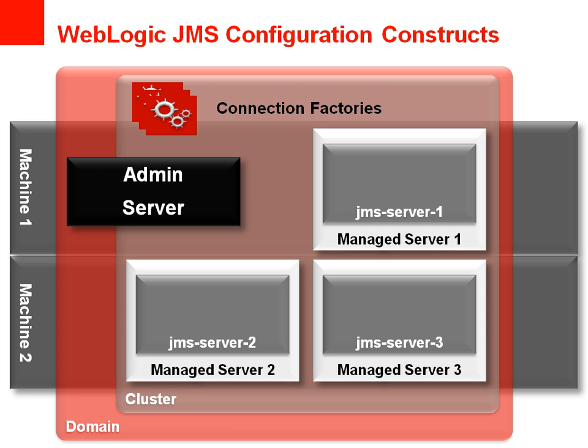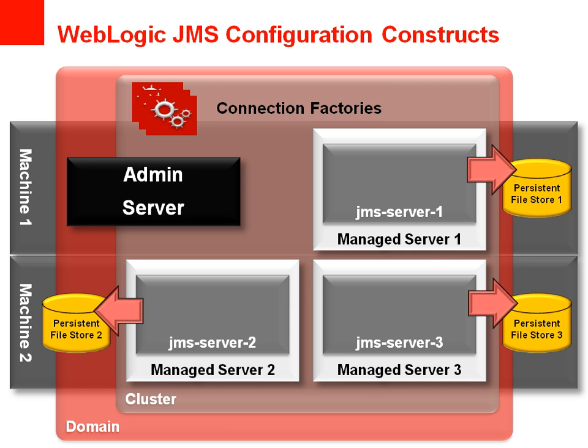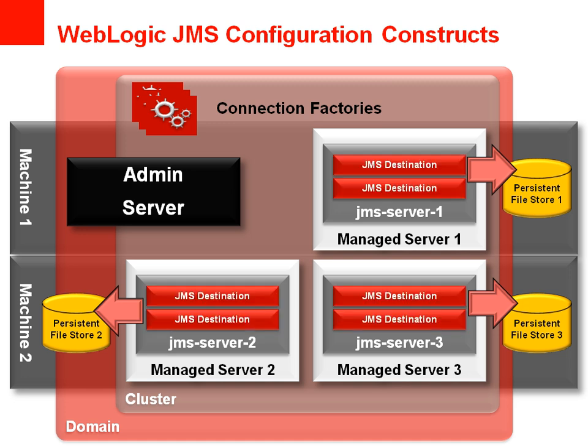Next, you will configure a JMS server for each managed server in your cluster where you are using JMS. The JMS server is where you enable things like persistent storage. For persistence, you have the option of using a file-based store or a database. If you are using a database, it is important to make sure that it meets the requirements you have for HA. Finally, destinations are created and targeted to JMS servers. In the case of a distributed destination, one physical destination is created in each JMS server where the distributed destination is targeted, and they are accessed through one single global JNDI name.